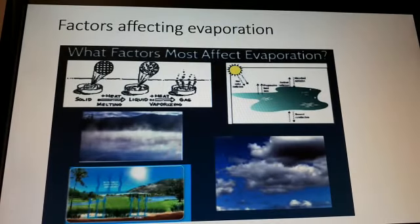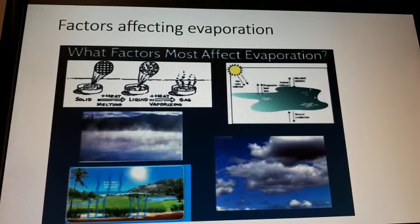Next we studied evaporation. Evaporation is the process by which a liquid turns to gas below its boiling point. Particles near the surface with the highest kinetic energy have enough energy to escape from the liquid. After they escape, the average kinetic energy of the remaining particles decreases, and therefore the temperature of the liquid decreases. That is the process of evaporation.